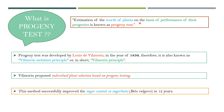The idea of progeny testing was first proposed by Louis de Villimorin in the year 1856. You must have known about Mendel's great experiment, where he used about 32 varieties and selected only 22 pure homozygous varieties in his two years of experiment. The procedure he applied in selecting those pure varieties was simply progeny testing, but he did not mention it in his paper. The idea of progeny selection became popular only after Villimorin, and therefore it is also known as the Villimorin isolation principle.